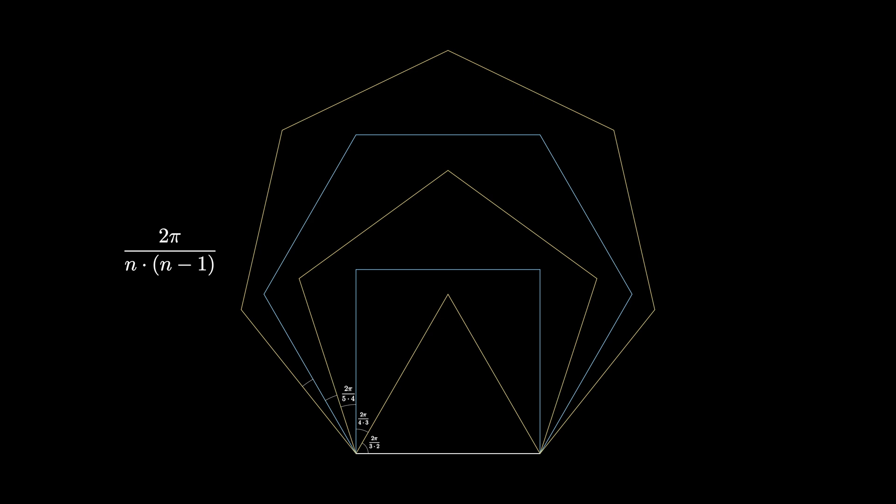So the angle between the regular n-gon and the regular n-1-gon is always 2π divided by n times n-1 as we extend this picture out.